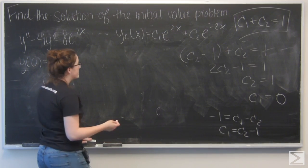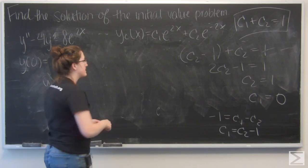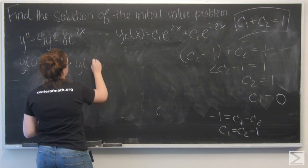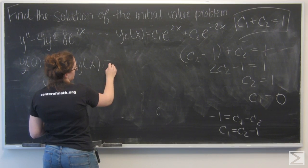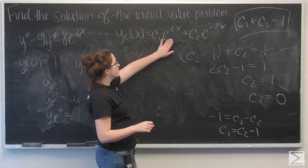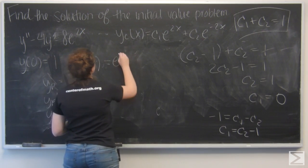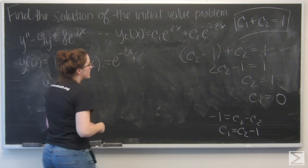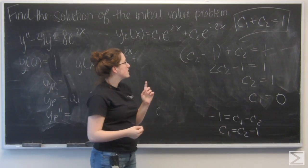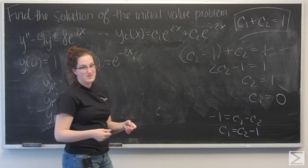So I can plug those in and I will get the solution y of x. c1 equals 0 and c2 equals 1, so I have e to the negative 2x plus yp which was 2x e to the 2x. And this is my answer.